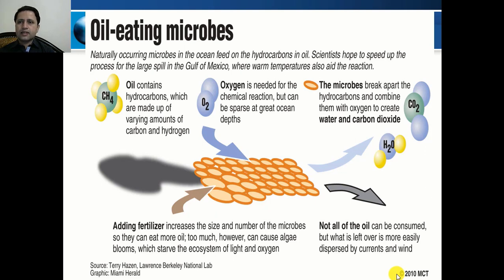Here is a general mechanism of oil-eating microbes — how oil can be degraded using microbial cells. Naturally occurring microbes in the ocean can feed on hydrocarbons in oil, and warm temperatures aid the reaction. Oil contains hydrocarbons made up of varying amounts of carbon and hydrogen. The process can be enhanced by adding oxygen and fertilizers; fertilizers act like nutrients, increasing the number and growth of microorganisms, though this can also cause algal blooms that affect the ecosystem and photosynthetic activity.